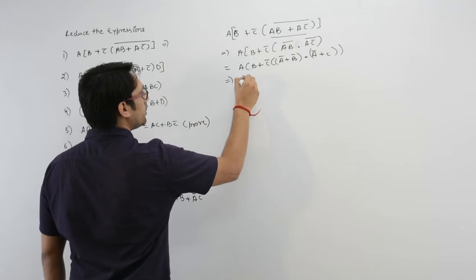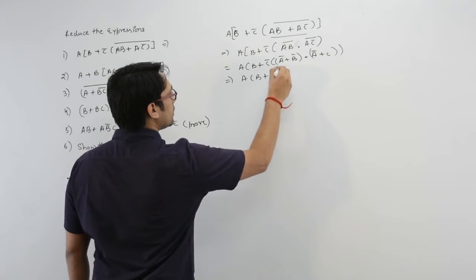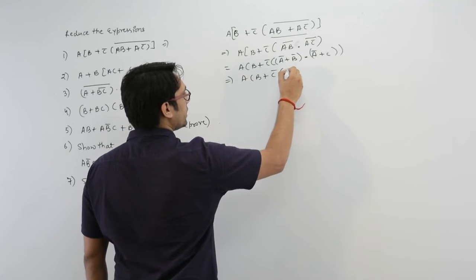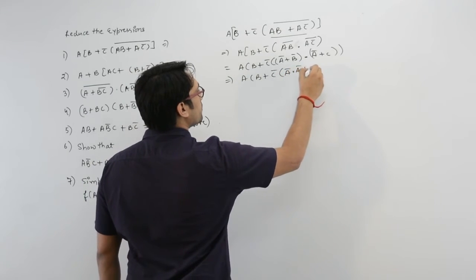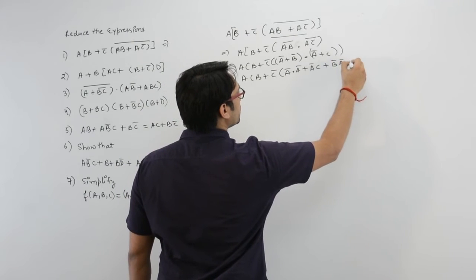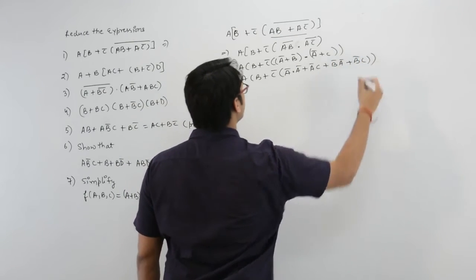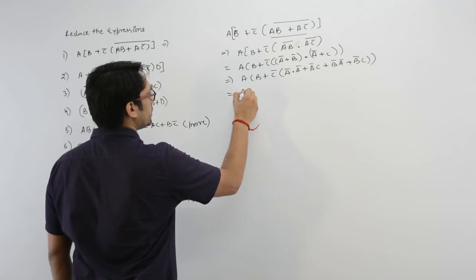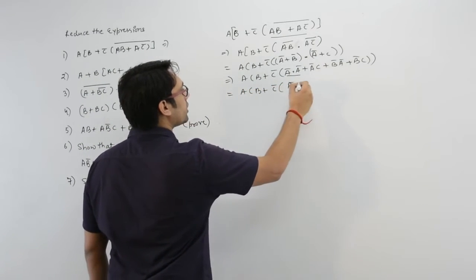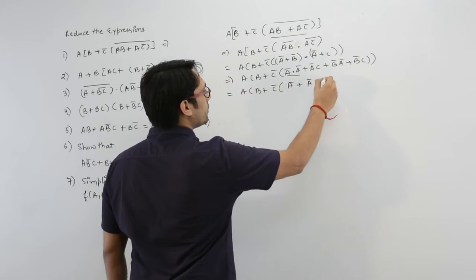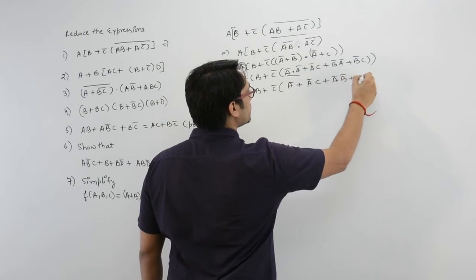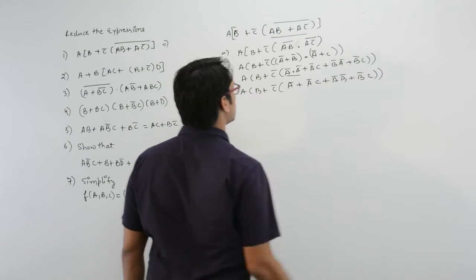Now try to solve B plus C complement by expanding the bracket. So it is A complement dot A complement, plus A complement C, plus B complement A complement, plus B complement C. Further, this becomes A complement plus A complement C plus A complement B complement plus B complement C.